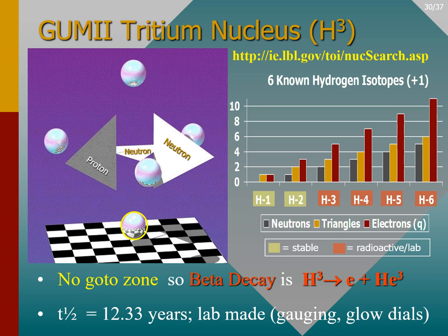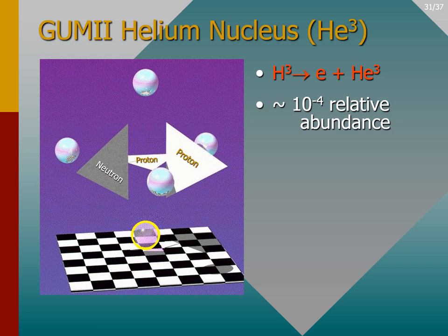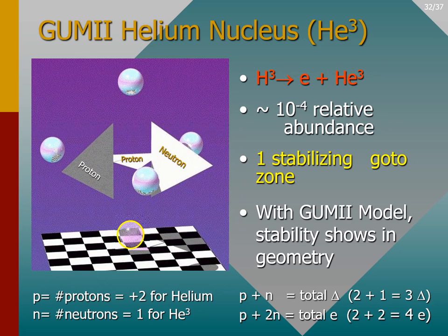Observe what happens to the electron highlighted with a yellow circle. A moment of time has passed and beta decay has occurred — an electron has been ejected from the nucleus. Where there was once an electron bordered by a yellow circle, there is now only a semi-transparent sphere representing a go-to zone. So an unstable isotope of hydrogen has turned into a stable isotope of helium, but it is a very small percentage of all the helium found on Earth. It is the existence of one and only one go-to zone that shows us that the GUMMI model is stable and not radioactive.